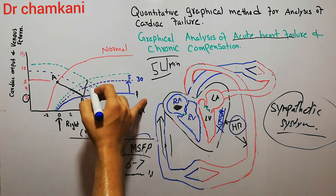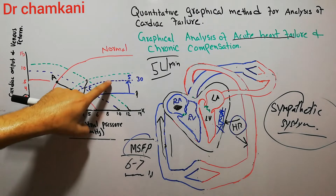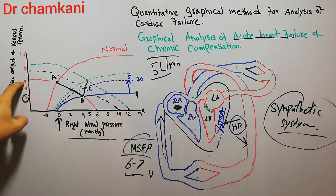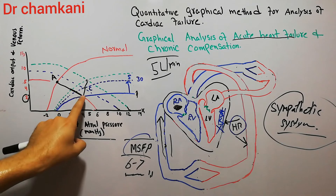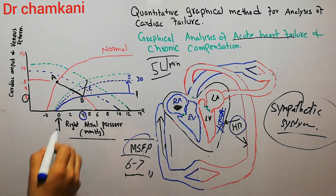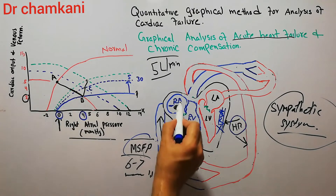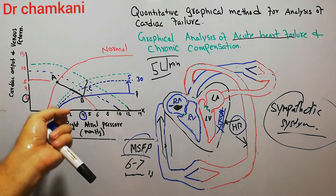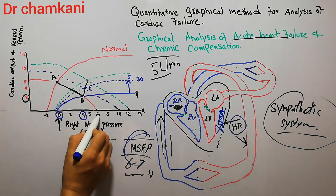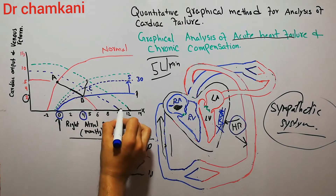A new point is achieved which is Point C. At Point C, the new cardiac output curve and the new venous return curve are meeting. The cardiac output has now increased to 4 liters per minute. The right atrial pressure has further increased and is now 5 mmHg. The mean systemic filling pressure — the pressure with which blood is being pumped toward the right atrium — is now 10 mmHg, increased from the normal 6 to 7 mmHg.